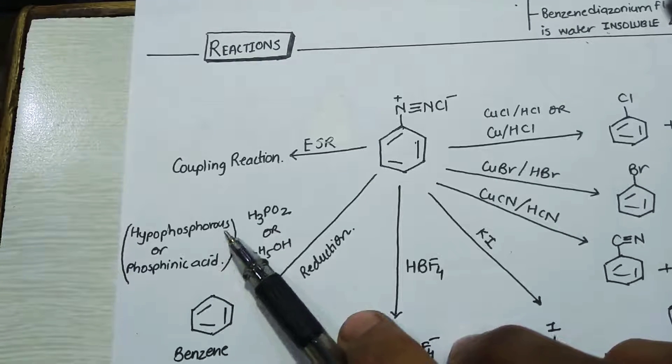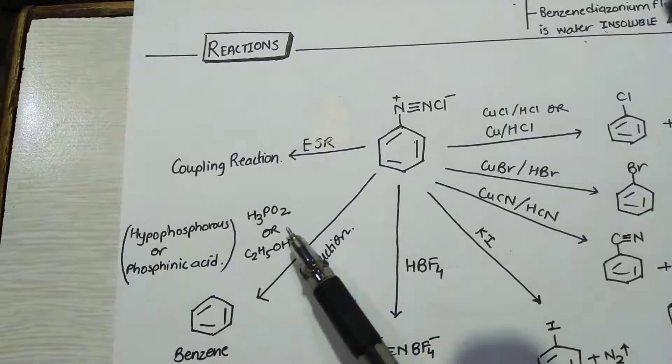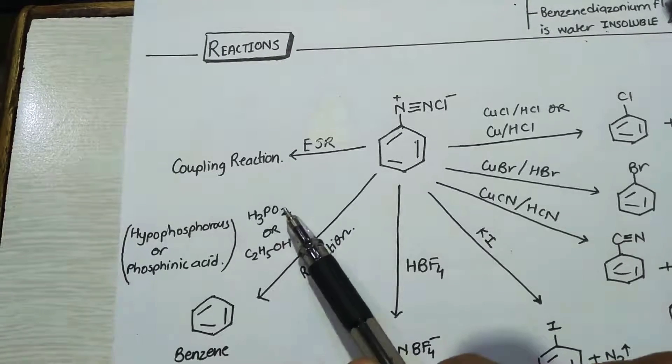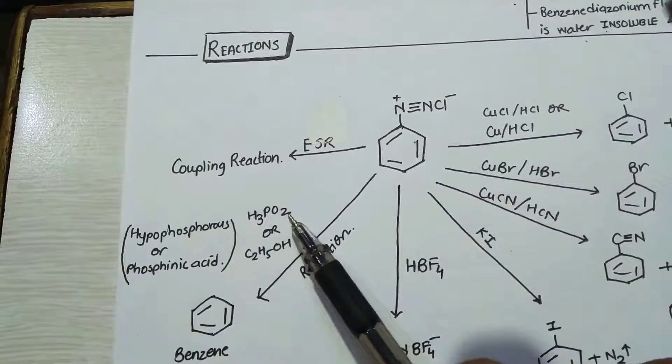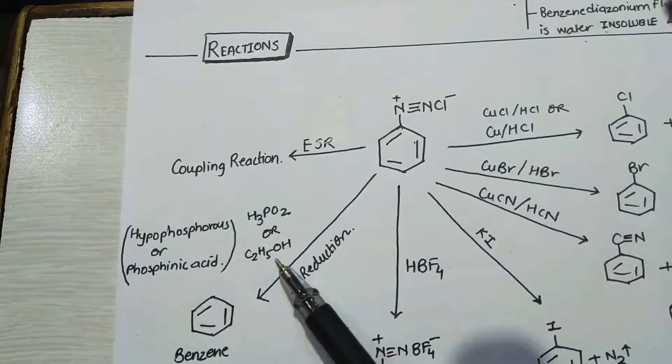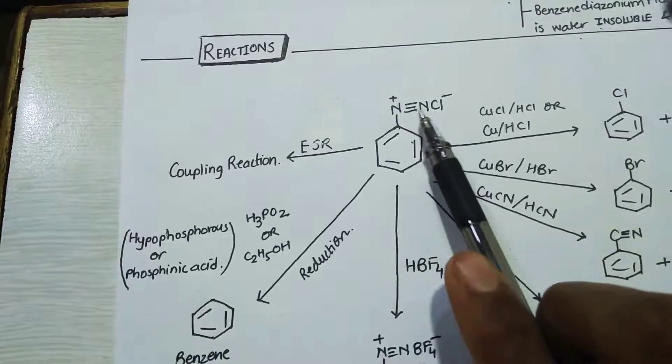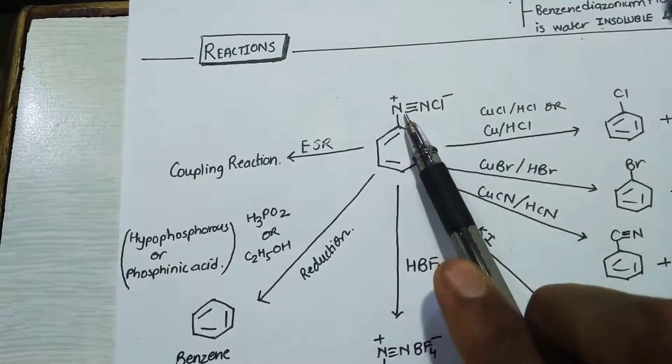hypophosphorous acid, then it will give you benzene. And you can also use ethanol as a reducing agent. So both of these will reduce diazonium. This is repeatedly asked in many entrance exams. So remember, if you want to make benzene, that means you want to replace the diazonium group with H, replacement by H, then what you will be using: you will be using phosphinic acid.